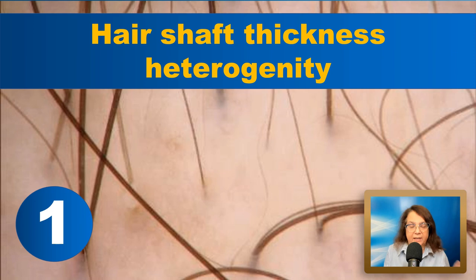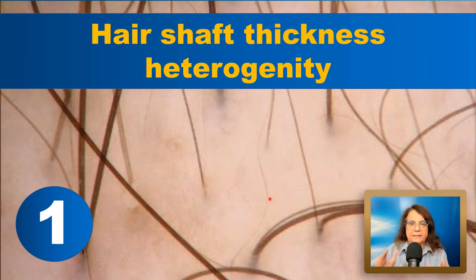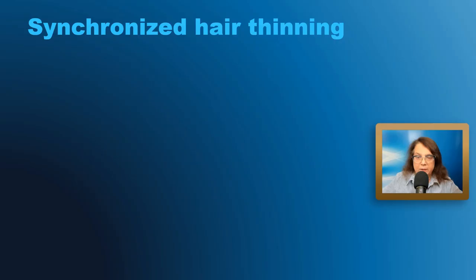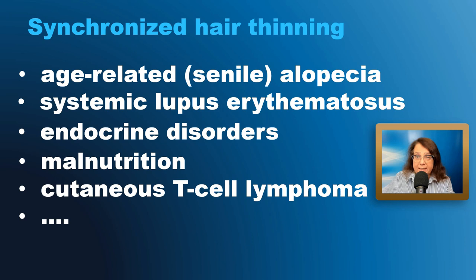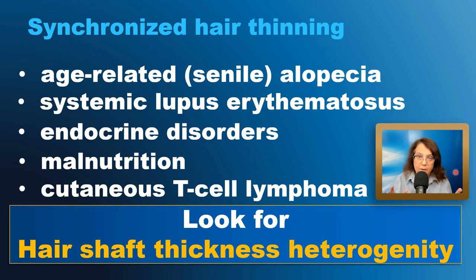In one field of view, we will have hairs which are very thick, some which are thinner, some which are very thin, and also some vellus hairs. This is unique for androgenetic alopecia because in all other diseases the hair thinning process goes simultaneously. We may see synchronized hair thinning in senile or senescent alopecia, but in those diseases we will see no hair shaft thickness heterogeneity.